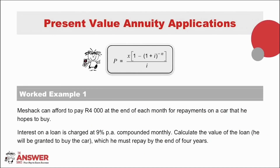First, just a reminder of the formula. To calculate P, we take X, which is the regular payment, into 1 minus (1 plus i) to the negative N, where i is the interest rate and N is the number of payments, and divide it all by i.